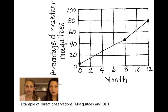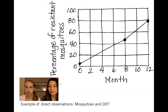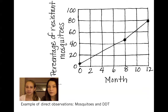Here is an example of direct observations of evolution. We can see that mosquitoes, before they were adapted to resist DDT, were less resistant. Then, as more DDT was used over the months, more and more mosquitoes became resistant because the mosquitoes with traits that allowed them to be resistant went on to reproduce.